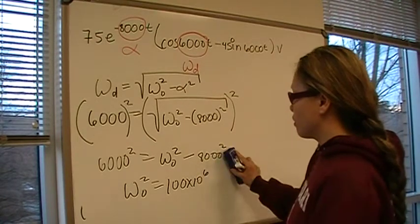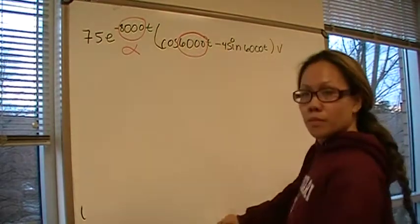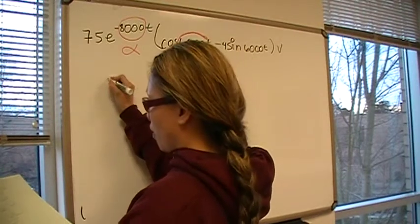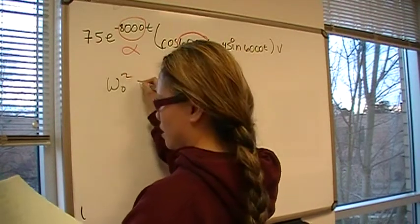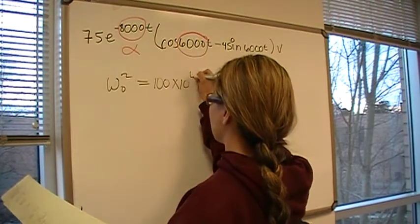From there, we have omega 0 squared equals 100 times 10 to the 6th.